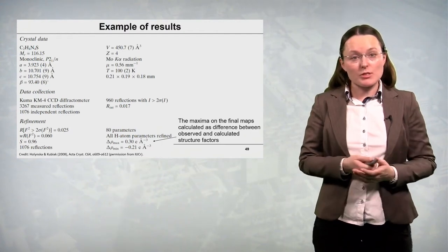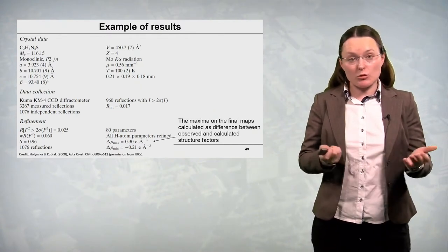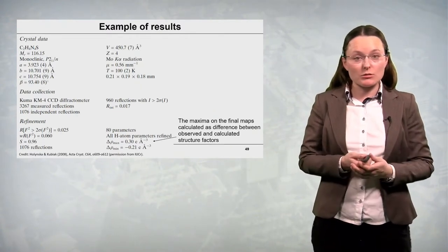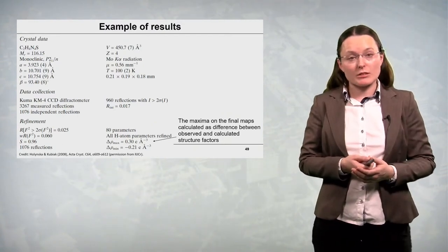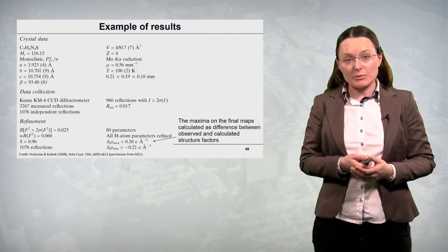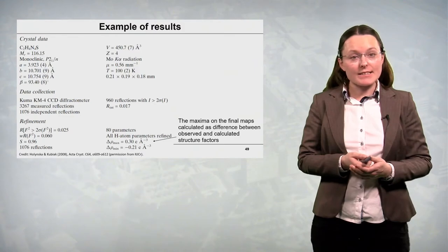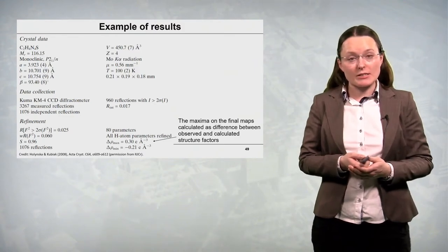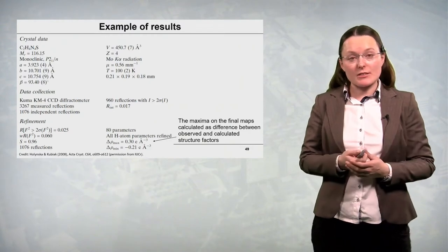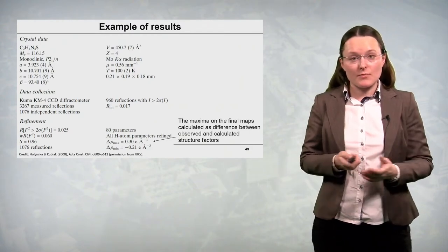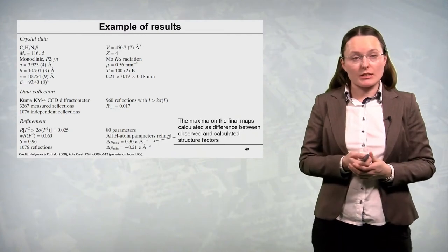Hydrogen atoms are very poorly seen by x-ray diffraction experiment as hydrogen contains only one electron. But in this case the data allowed for full refinement of hydrogen atom parameters. And at the end we have the highest and lowest maxima for the distribution of electron density calculated